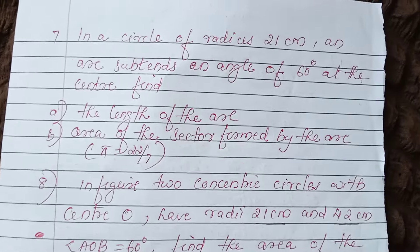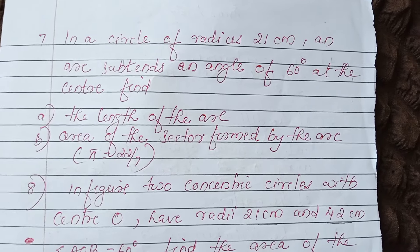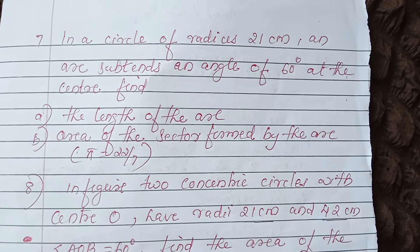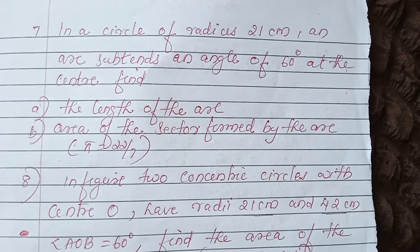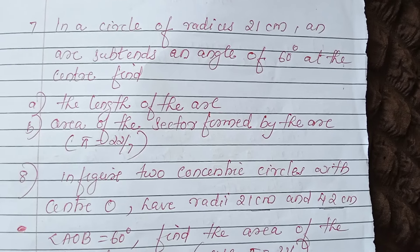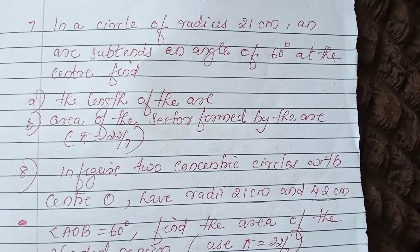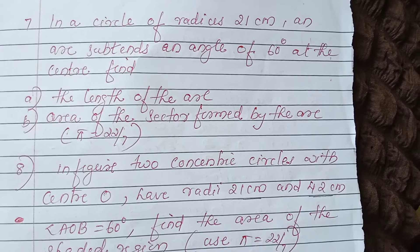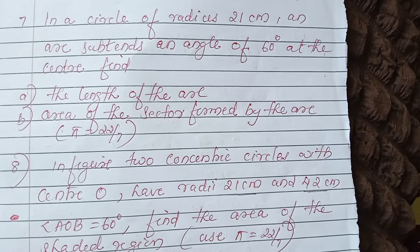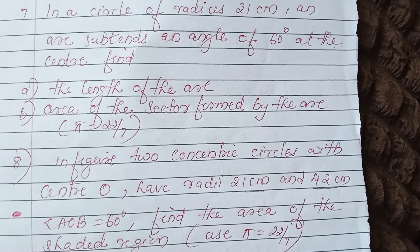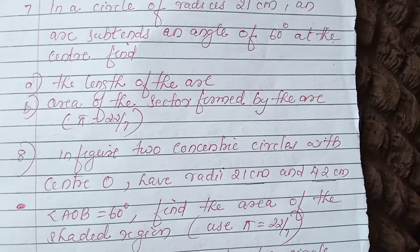Next question: in a circle of radius 21 cm, an arc subtends an angle of 60 degrees at the center. Find the length of the arc and also find the area of the sector formed by the arc. Use pi = 22/7.